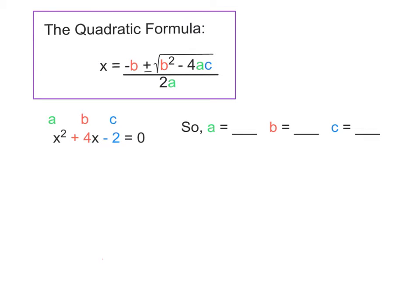This is the quadratic formula: x equals negative b plus or minus the square root of b squared minus 4 times a times c, all divided by 2a. There are a's, b's, and c's in this formula, and all of those letters need to be replaced by a number, and then we evaluate to find our values for x.